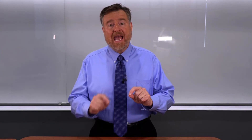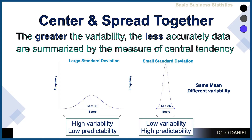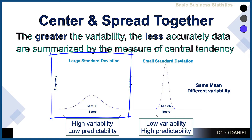That is the benefit of using central tendency and variability together. The greater the variability, the less accurately the data are summarized by the measure of central tendency. When variability is high, we have low predictability. We are going to measure variability using standard deviation, which I will teach you more about soon. In these two examples, the average score — the mean — is exactly the same. But in the distribution with high variability, scores may be close to the mean or they may be much higher or much lower than the mean.